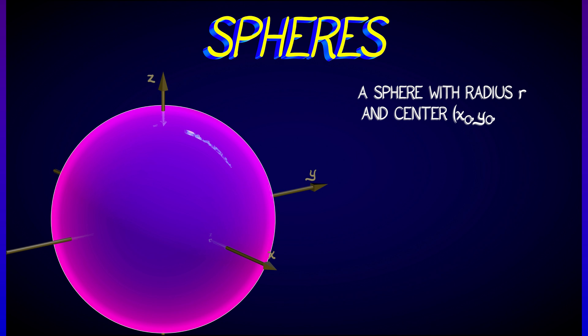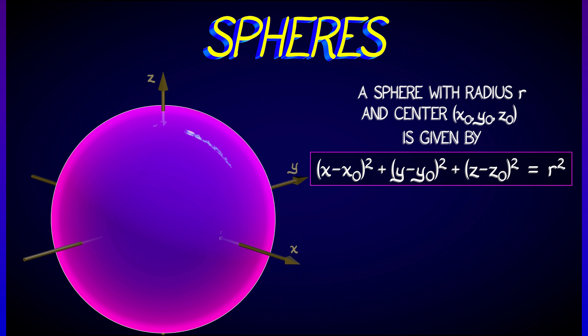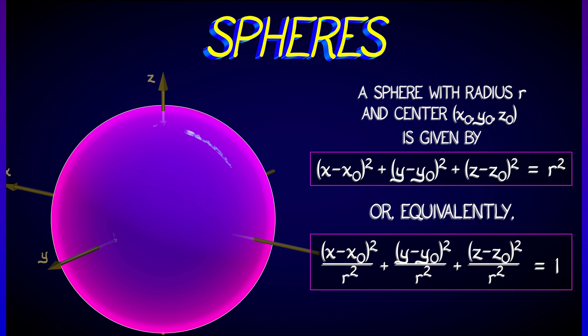Let's begin with something everybody knows, that is spheres. The equation for a sphere of radius r and center (x₀, y₀, z₀) is given by (x - x₀)² + (y - y₀)² + (z - z₀)² = r².